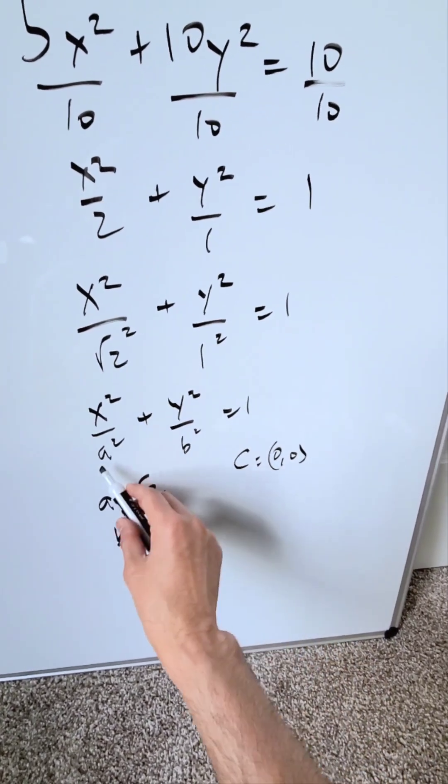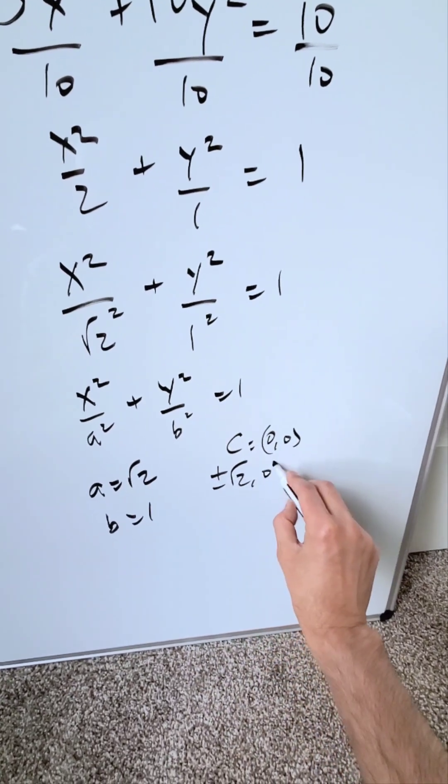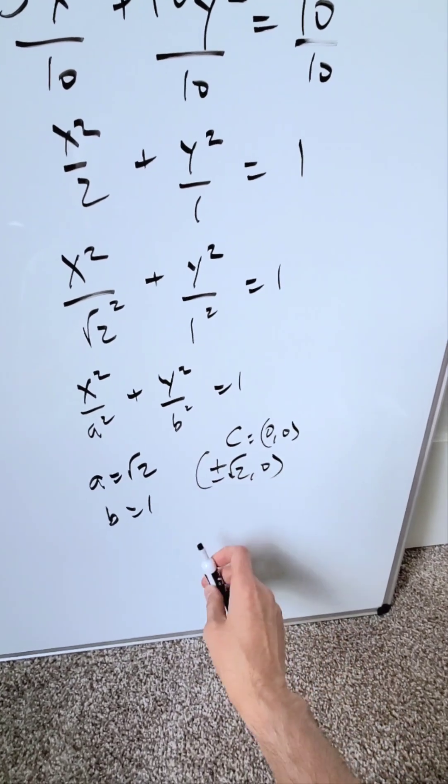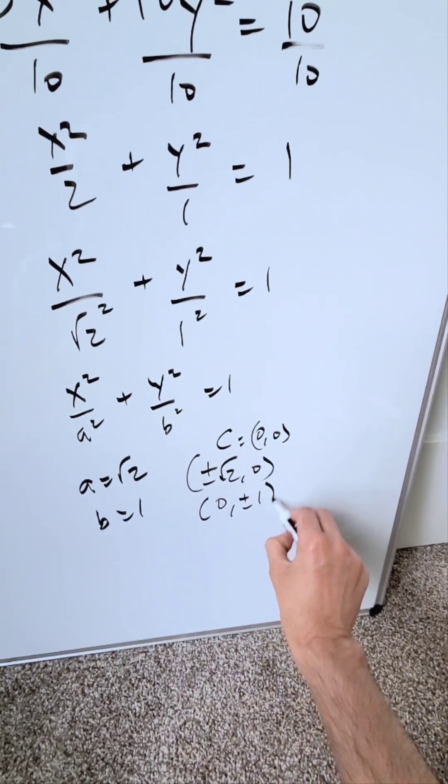We have major axis vertices which are based on the a and they'll be plus and minus root 2 comma 0. I will have here minor axis vertices which will be based along the y axis: 0 comma plus and minus 1.